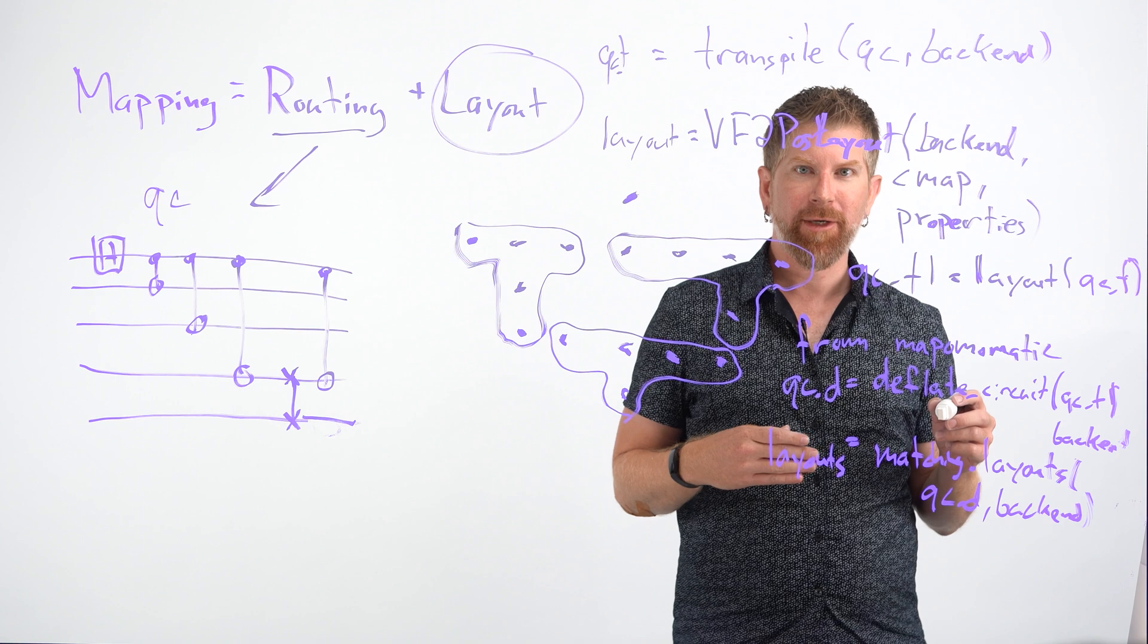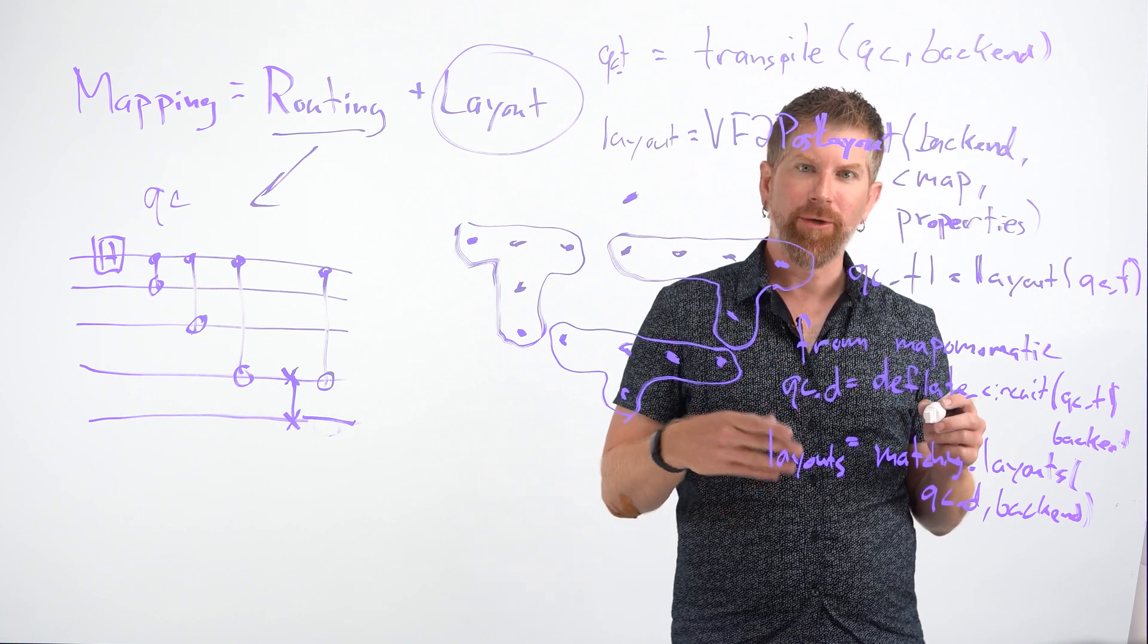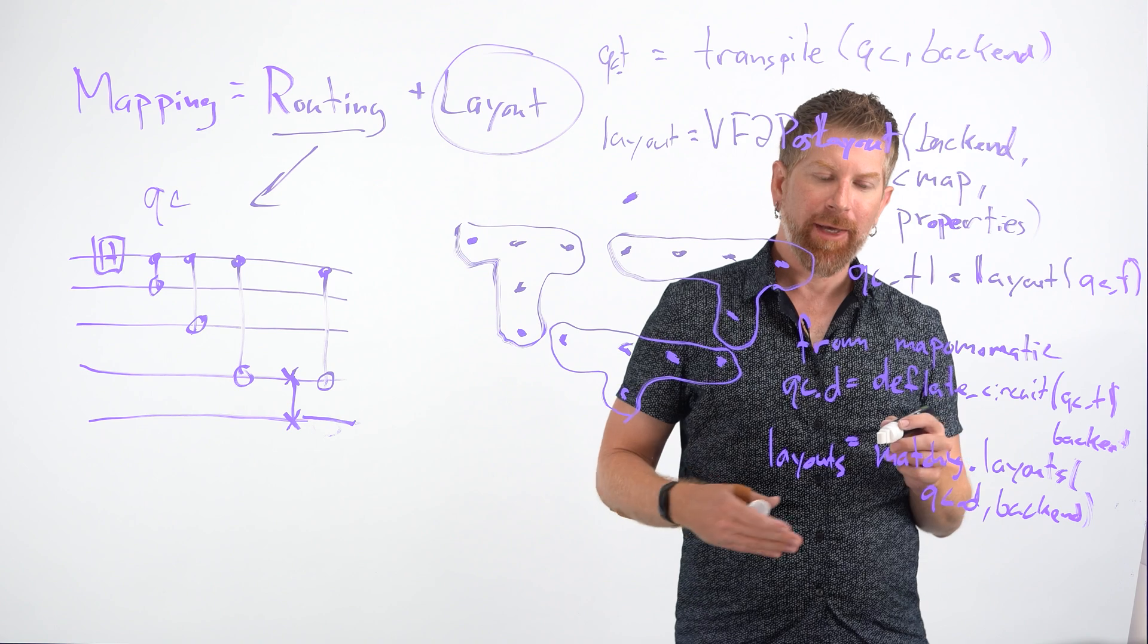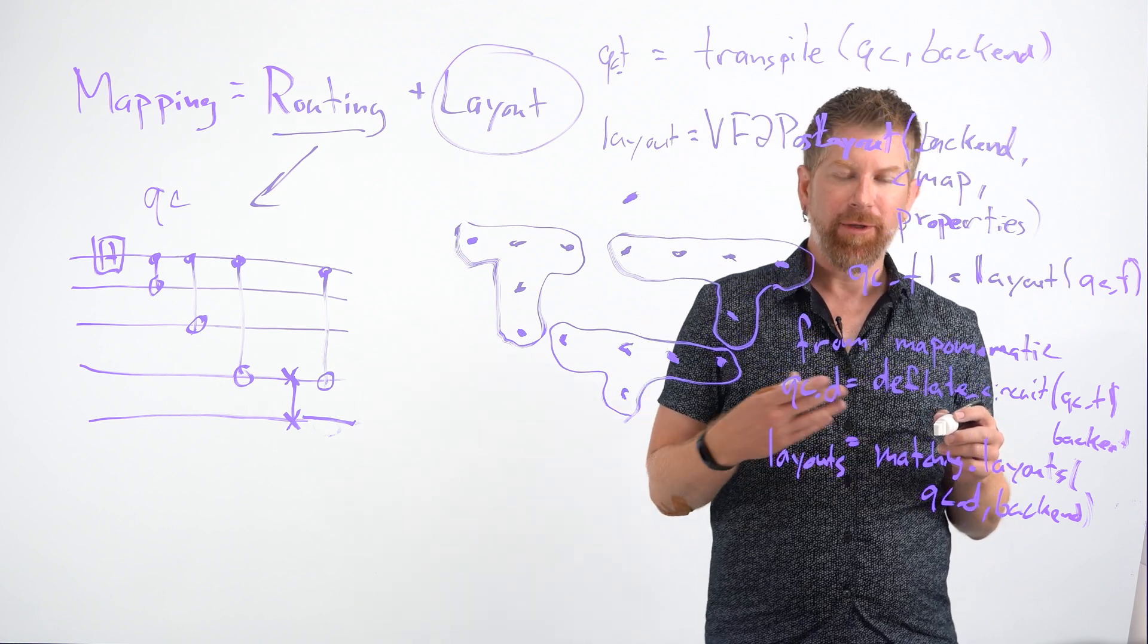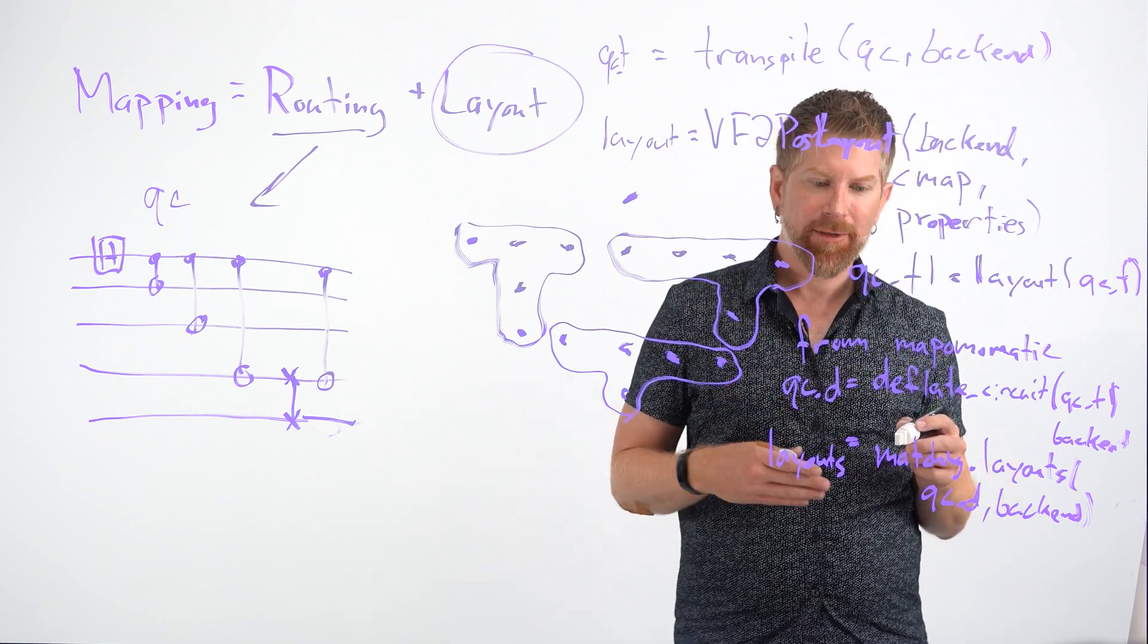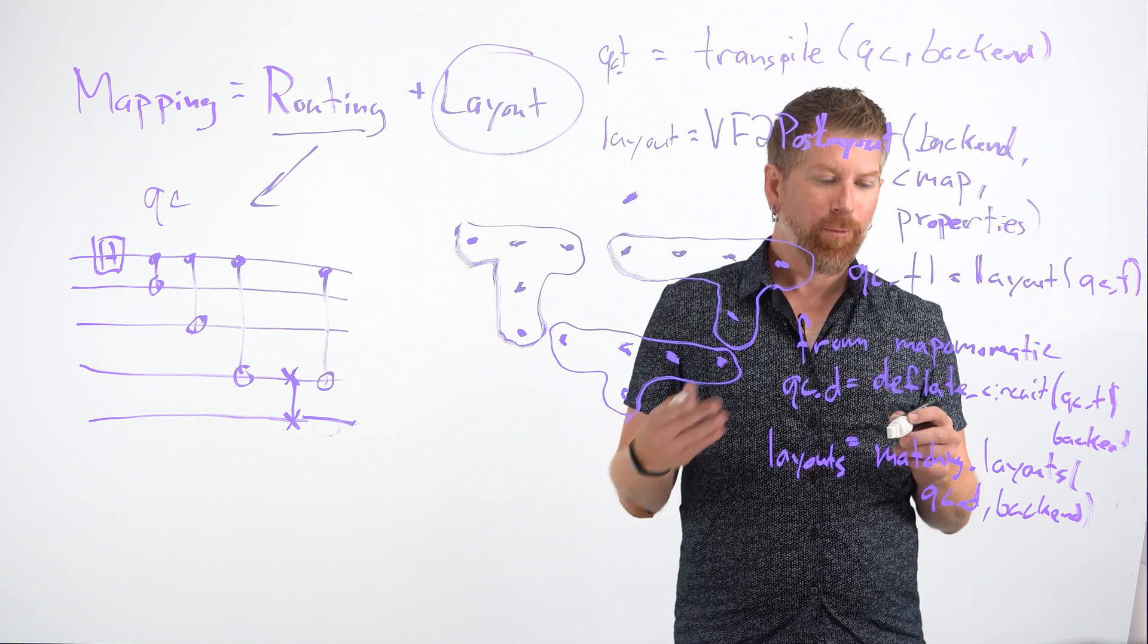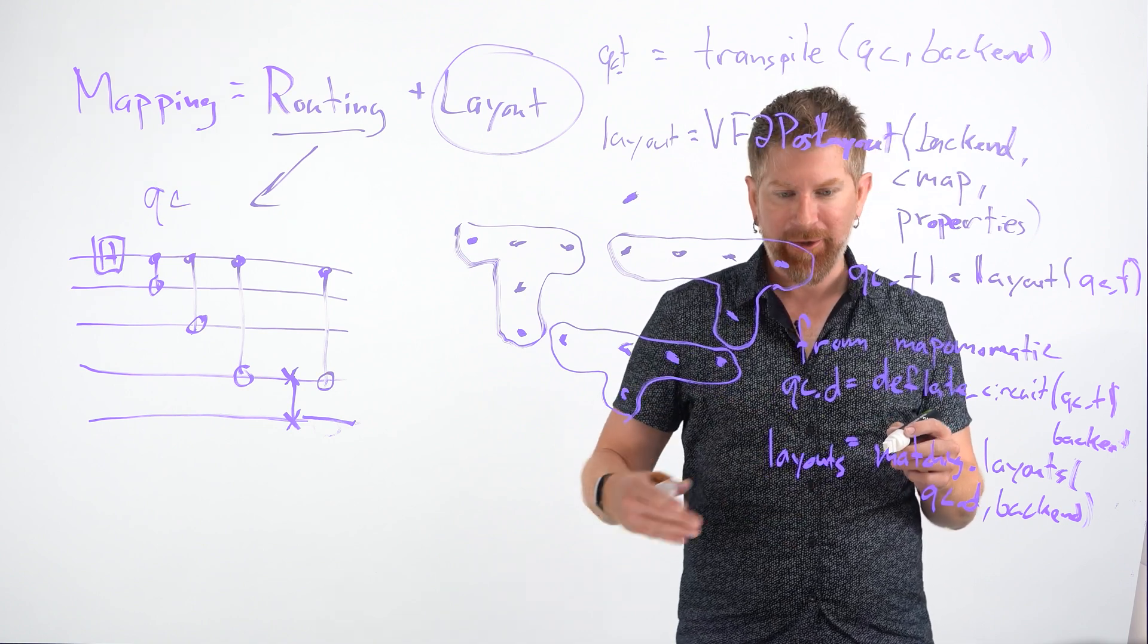So the way this works is the VF2 algorithm embedded in Map-O-Matic is going to take every five qubit topology that looks like this that it can find on this lattice, and it's going to return those. And then what Map-O-Matic does is it scores those according to the errors that the backend returns.